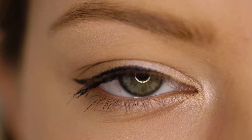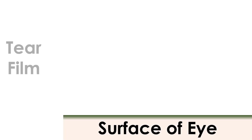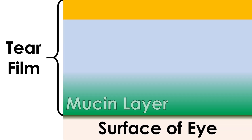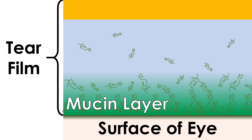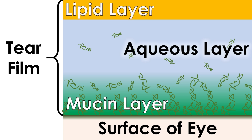The tear film found in our eyes is generally regarded as being made of three layers: a mucin-rich layer which aids adhesion of the tear film to the surface of the eye, an aqueous layer which forms the bulk of the tear film, and an oily layer which floats on top to minimise evaporation.